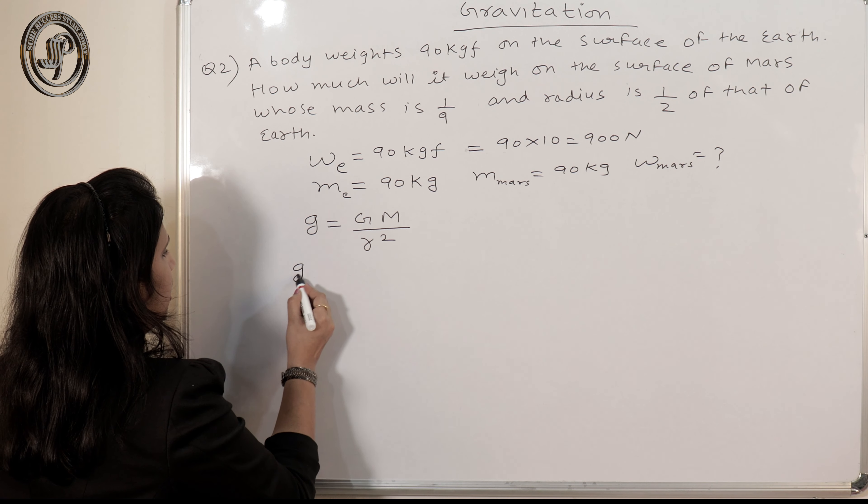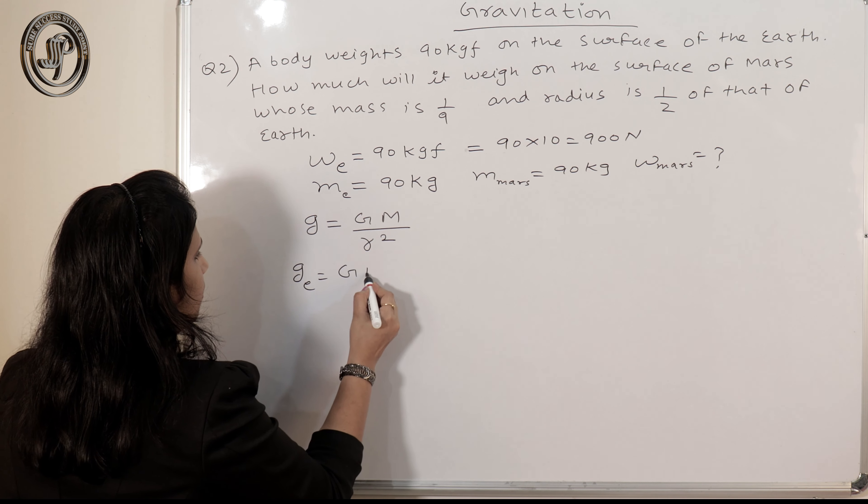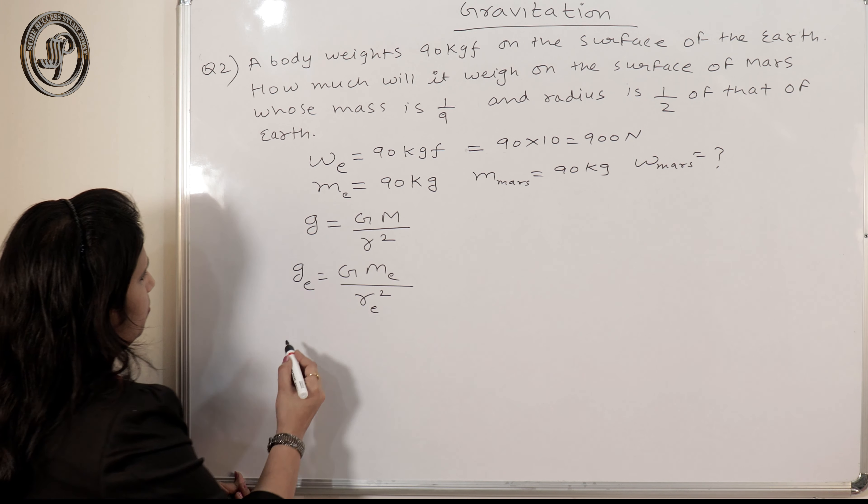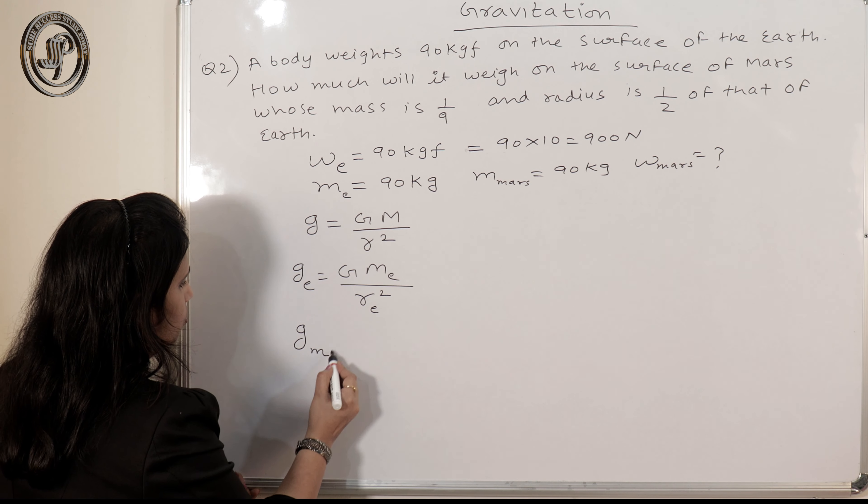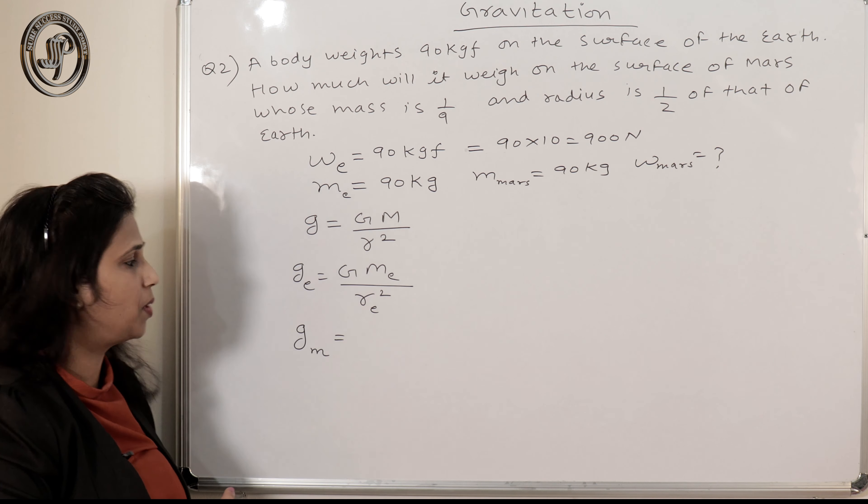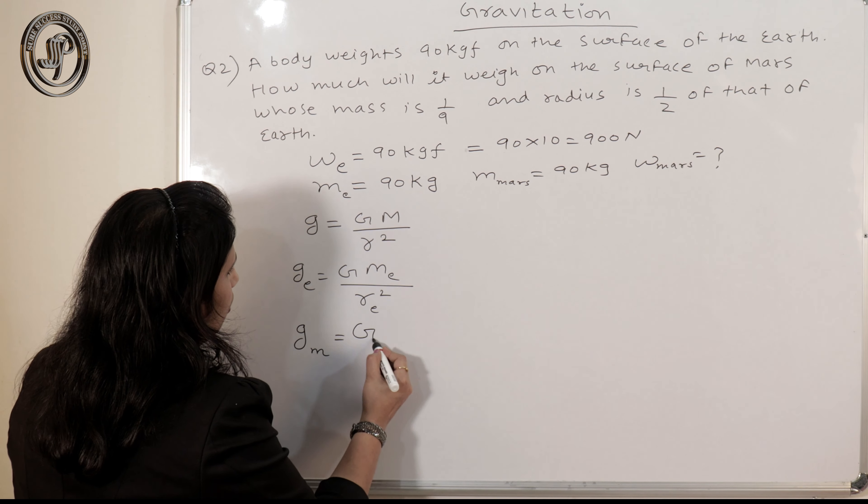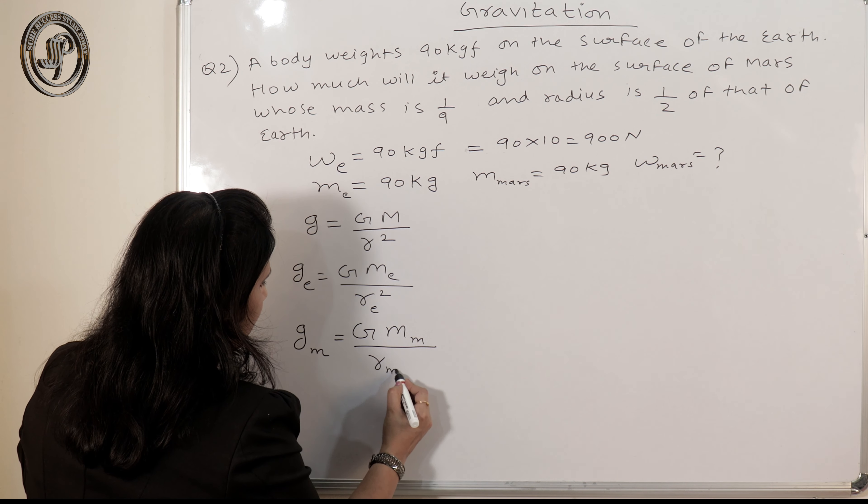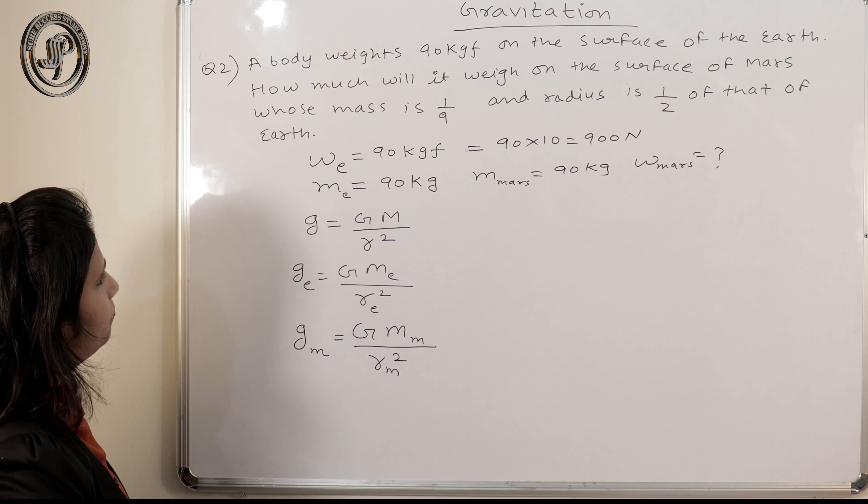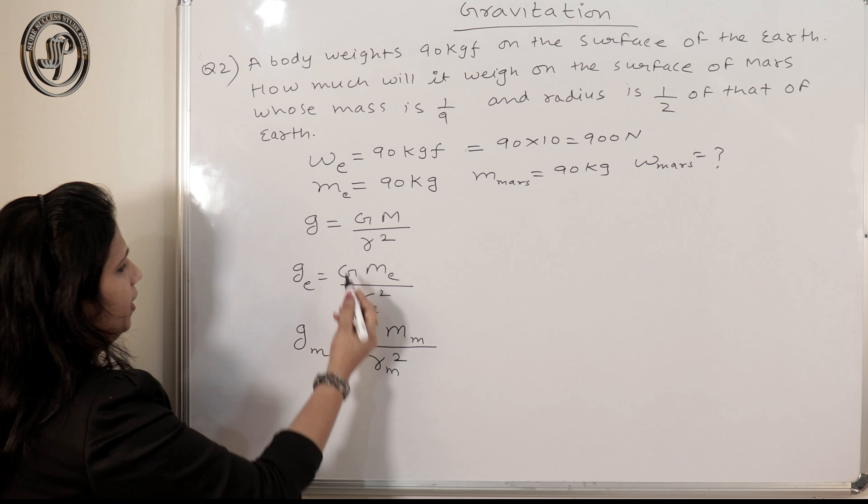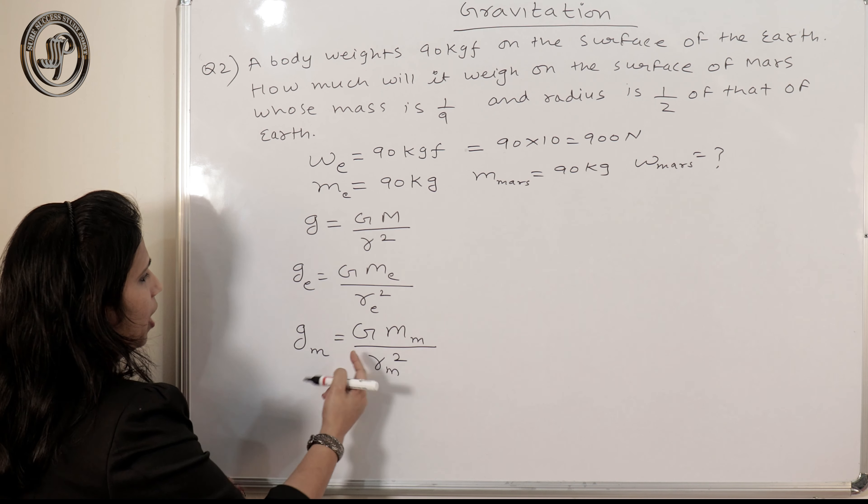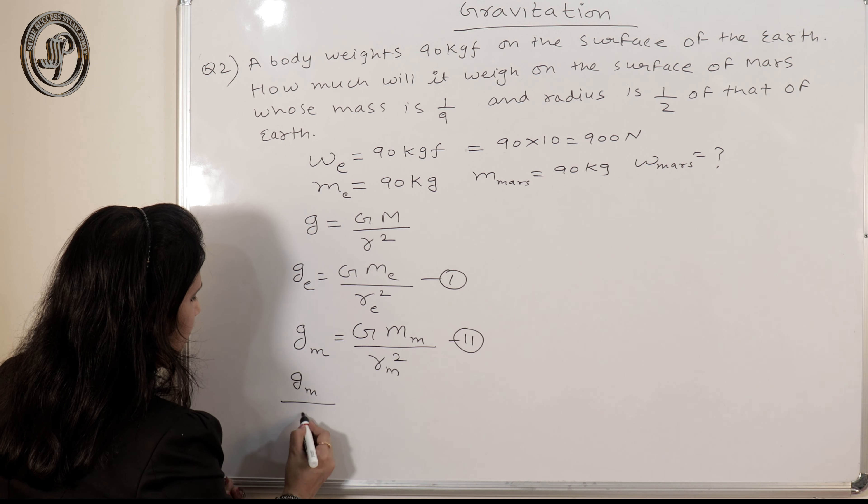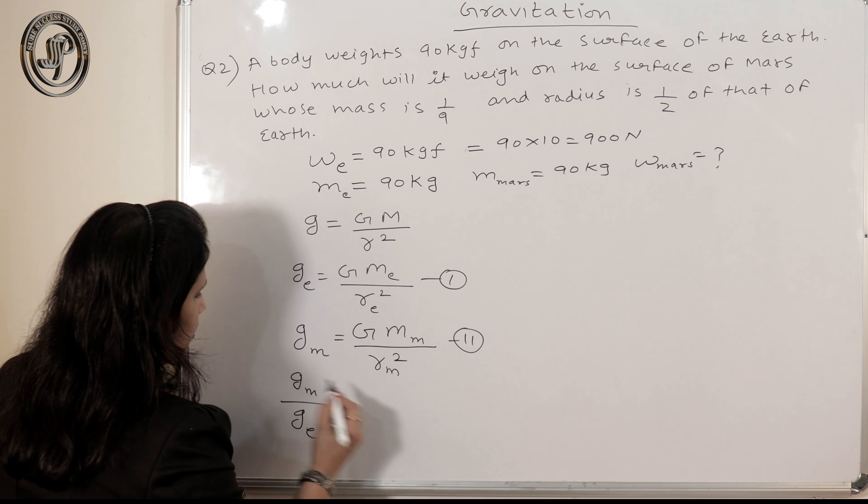So if we use this for earth, then how will I use this? G_e equals GM_e by r_e square. And if I use this for Mars, I'm using m symbol for Mars. So what will happen? g_m equals GM_m by r_m square. Now I can divide these two equations. If I divide equation 2 by equation 1, what will I get? Let's see.